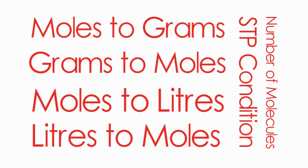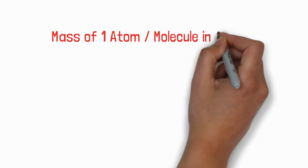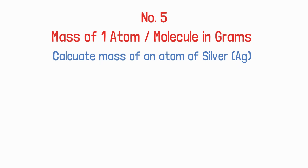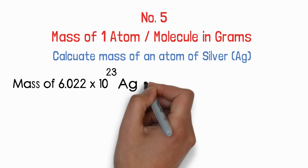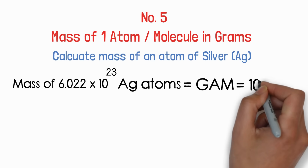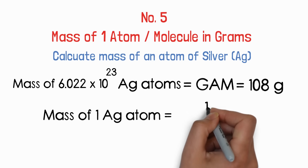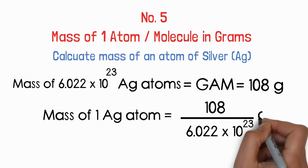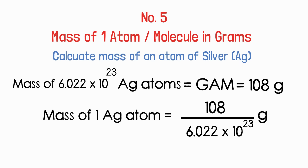Let's proceed to the next type: calculating mass of one atom or one molecule. Question: calculate the mass of one atom of silver. We know that the mass of 6.022 × 10²³ atoms equals gram atomic mass. For silver, gram atomic mass is 108 gram. So using the unitary method, mass of one silver atom = 108 / (6.022 × 10²³). Solve it and let us know the answer, or check the comment section.